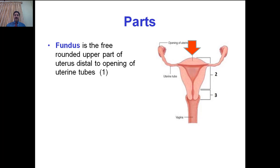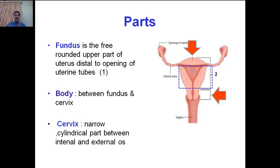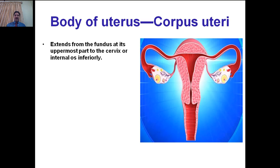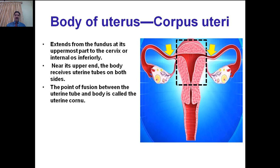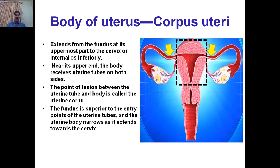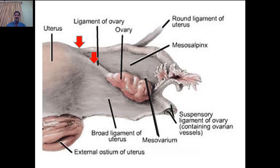The fundus is the free rounded upper part of the uterus, distal to the opening of the uterine tube. The body of the uterus lies between the fundus superiorly and the cervix inferiorly. The cervix is defined as the narrow cylindrical part between the internal and external os. The body of the uterus extends from the fundus at its uppermost part to the cervix inferiorly. Near its upper end, the body receives uterine tubes on both sides; the point of fusion is called the uterine cornu. The fundus is superior to the entry points of the uterine tubes, and the uterine body narrows as it extends towards the cervix.